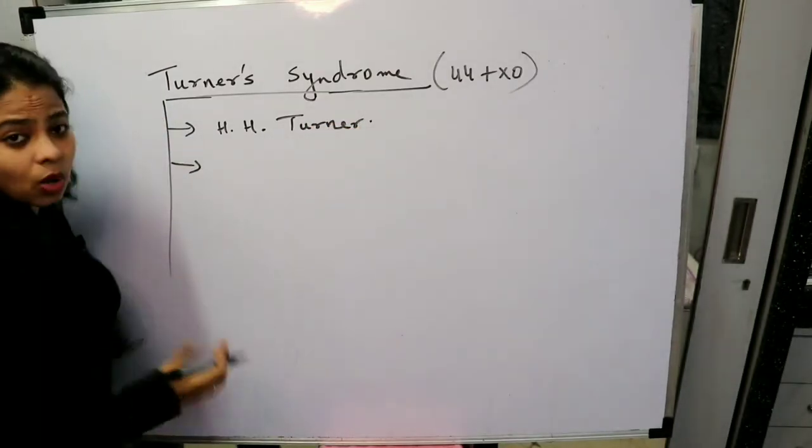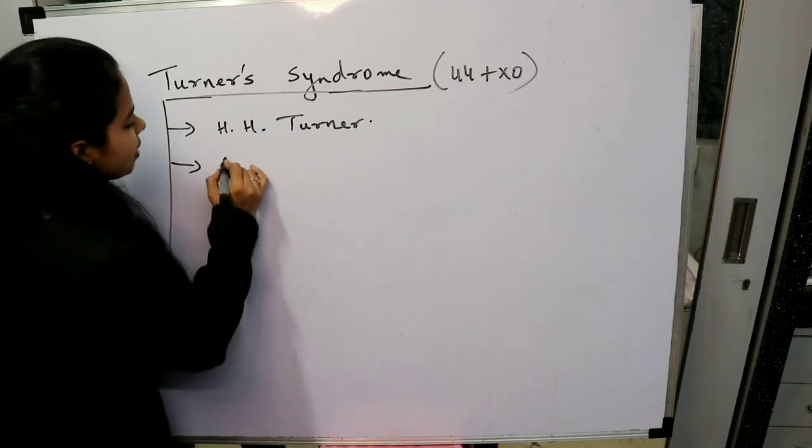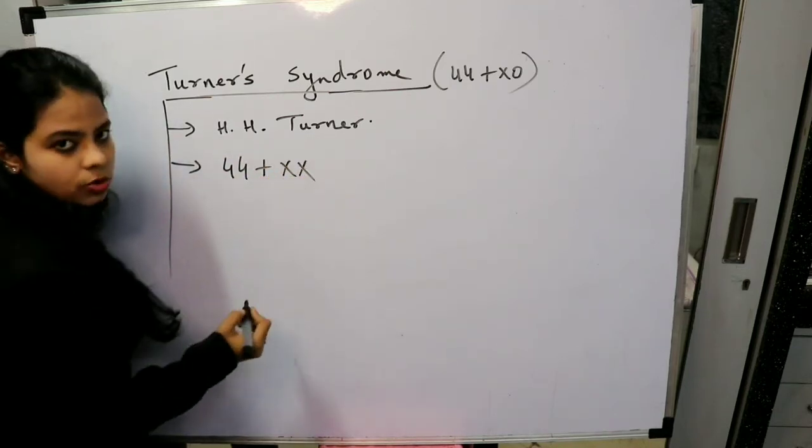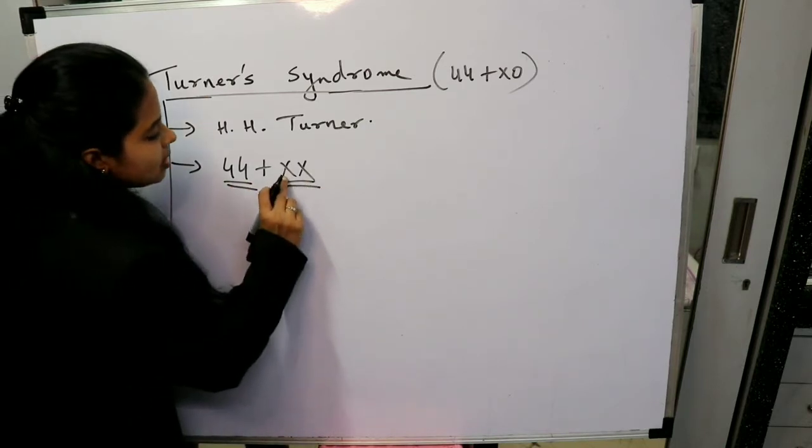Now next, what exactly happens here? In a normal female you have 44 plus XX chromosome, right? That is 44 autosomes and two sex chromosomes that is XX.